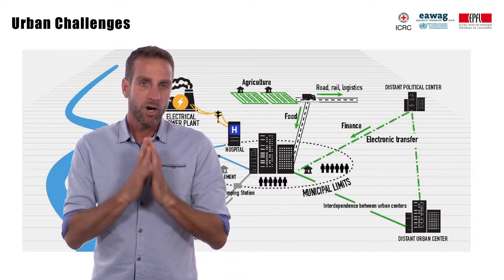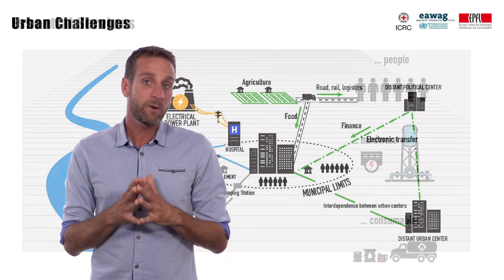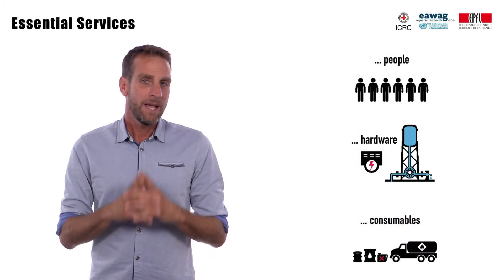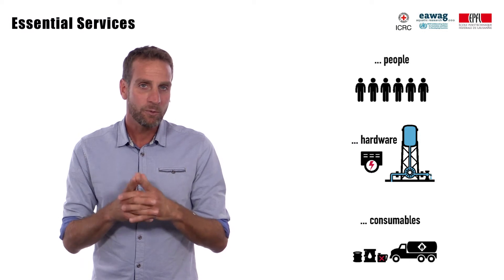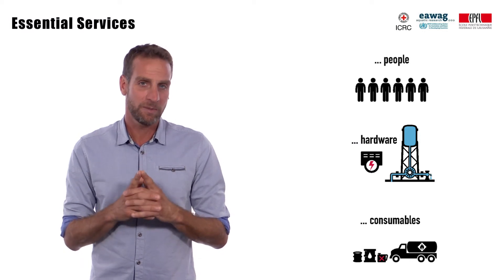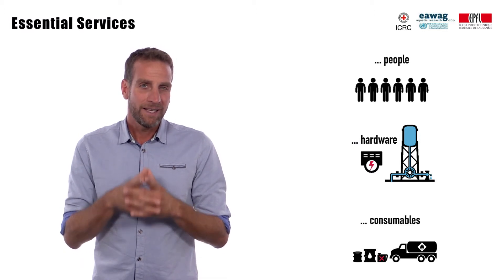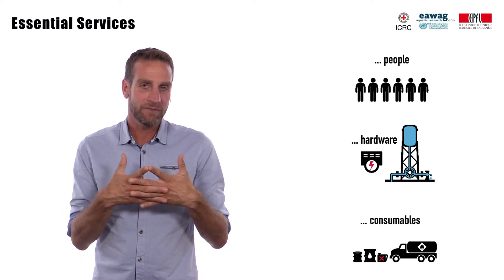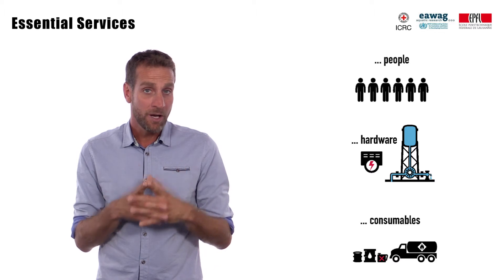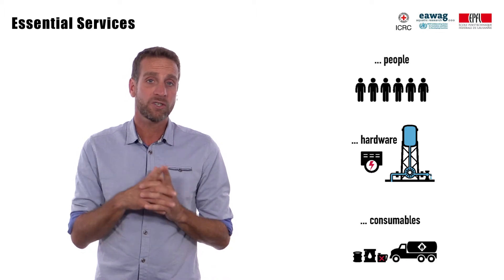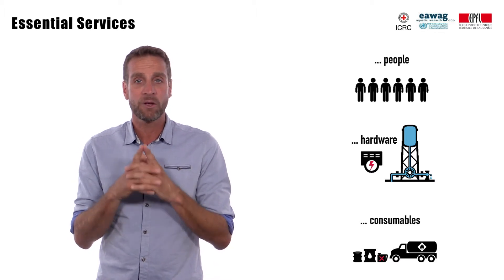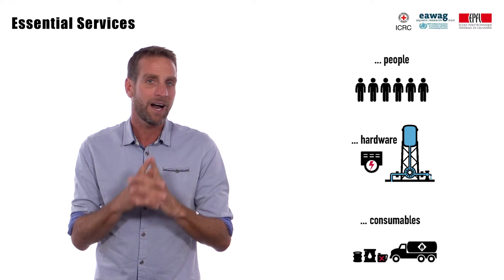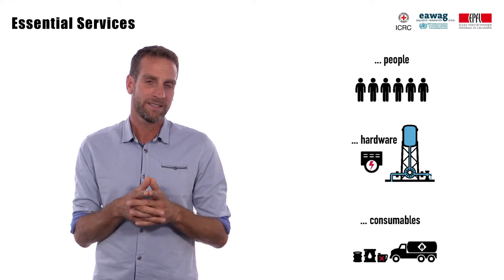Urban services require three elements in order to function: people, hardware, and consumables. Disruption to an essential service occurs when the functions of any of the critical people, hardware, or consumables are compromised.